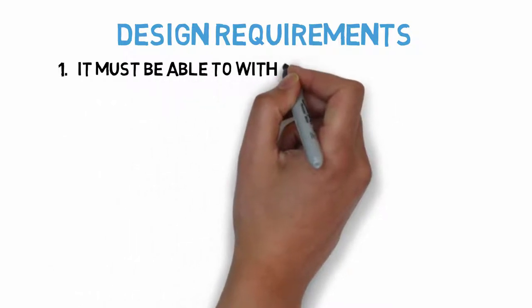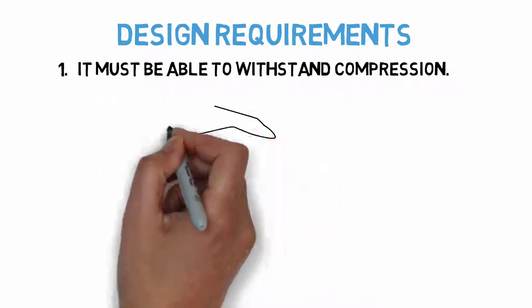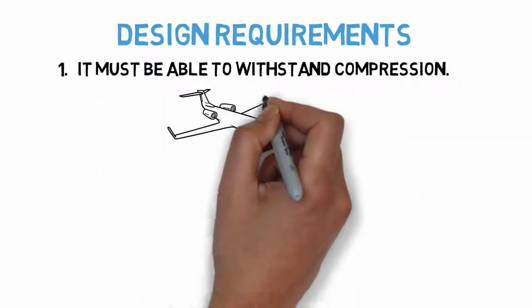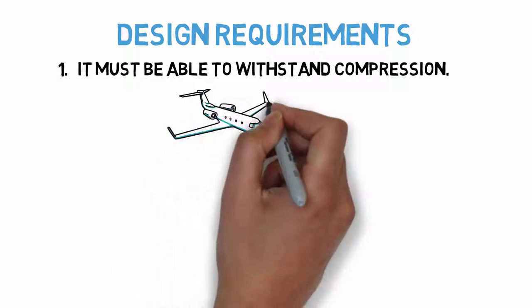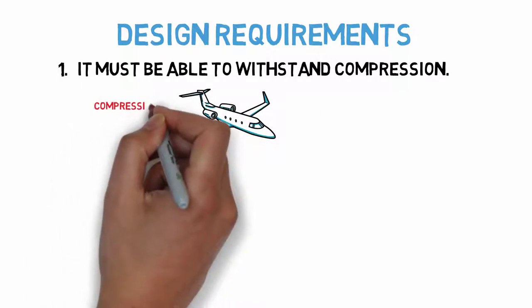One, it must be able to withstand compression. You'll learn about this in more detail next week, but because of lift forces on a wing it tends to bend upwards in flight, so the upper skin must be able to take compressive loads.